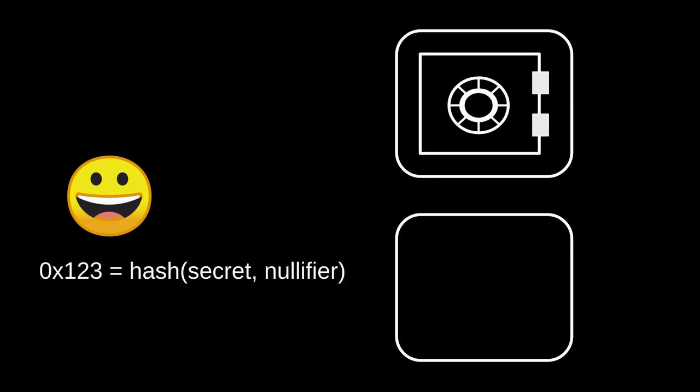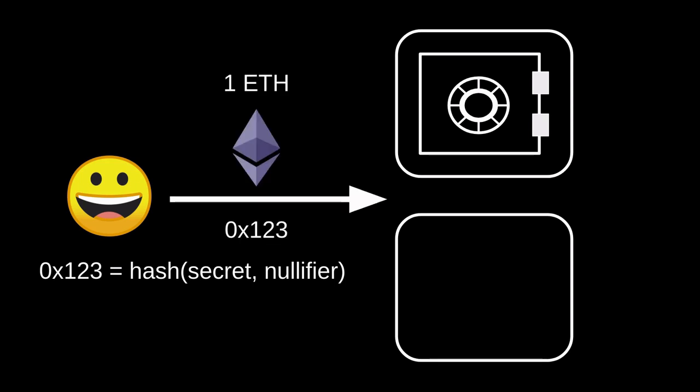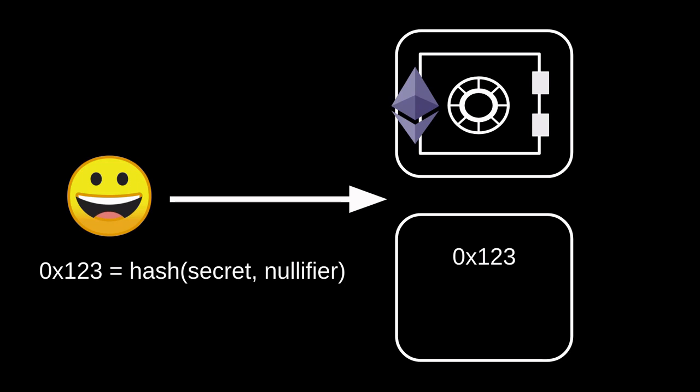First, let's take a look at how deposit works in Tornado Cash. Before she deposits, she'll have to pick two random numbers — a secret and a nullifier — and then she computes the hash of these two random numbers. To deposit into Tornado Cash, she'll send one Ether and the hash of the secret and the nullifier, which we'll say is 0x123. The Ether gets locked in the Tornado Cash contract, and this hash — called a commitment — is also recorded into the smart contract. This hash is later going to be used to withdraw the one Ether from Tornado Cash.